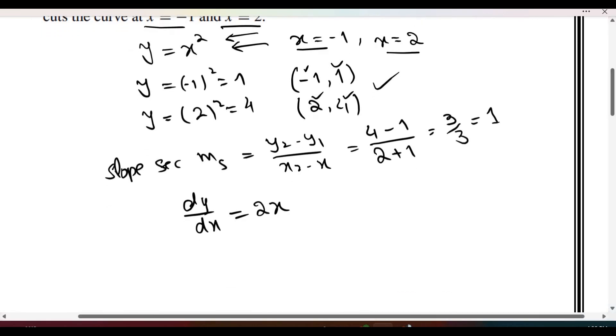So now, they are saying that parallel lines are, so 2x is equal to, or dy by dx is equal to slope of secant line.